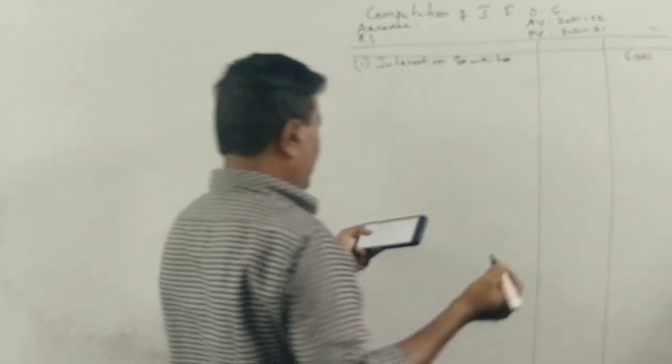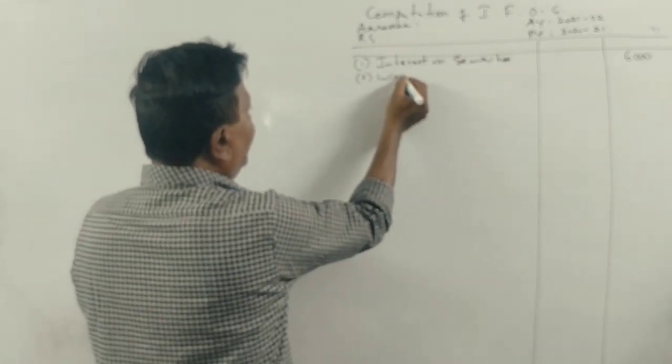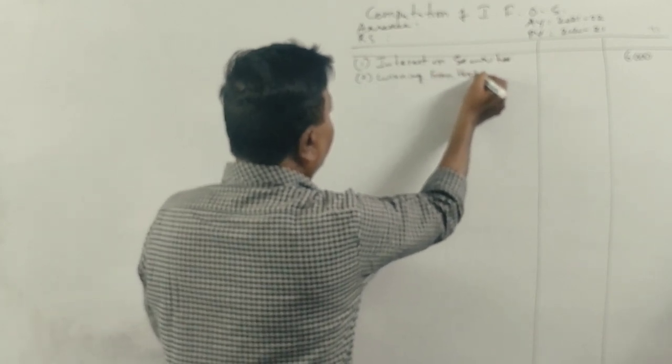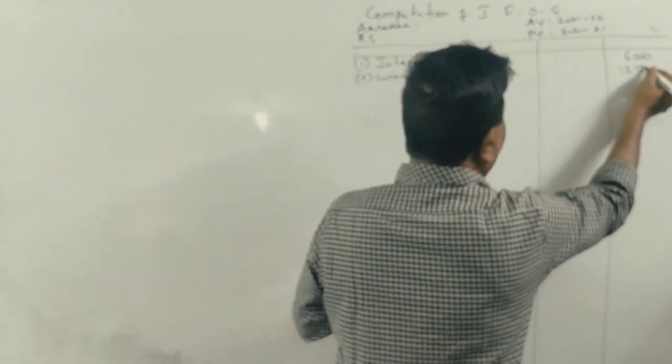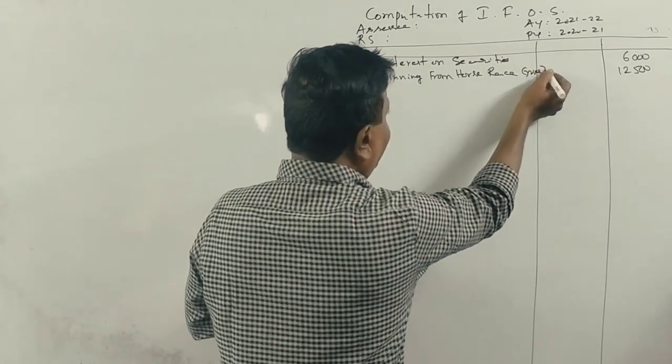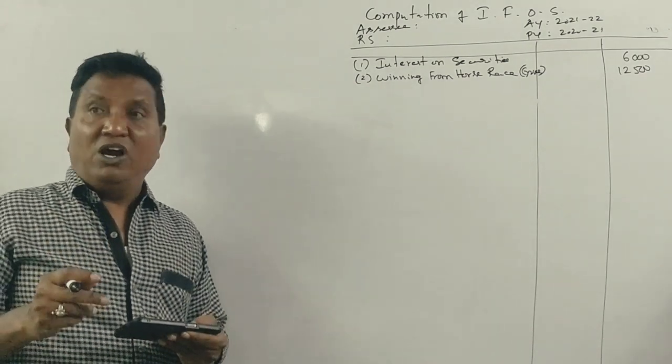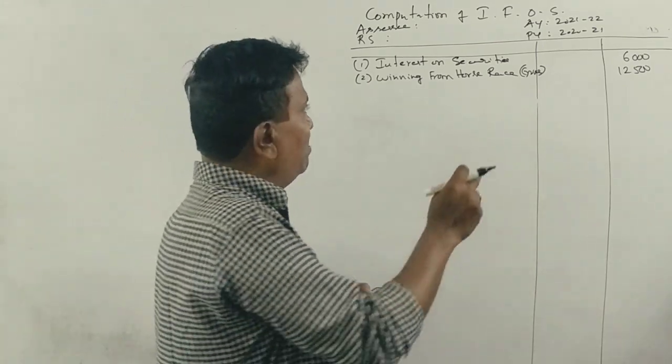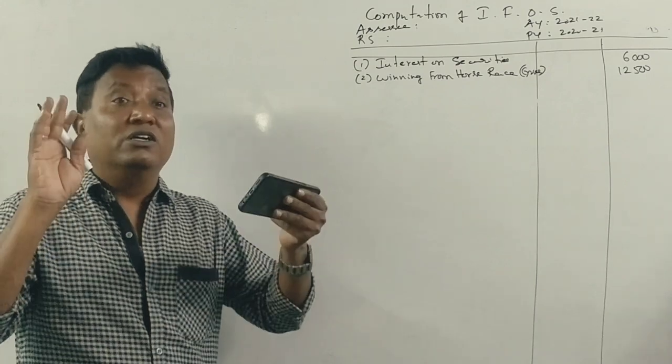Winning from horse race, what is the amount of Rs. 12,500? I will tell you. Gross, what is the meaning of gross? Before tax. What is the meaning of gross? Before tax. After tax. Now if you have income from other sources, after tax is the meaning of gross income, before tax is the meaning of gross income.